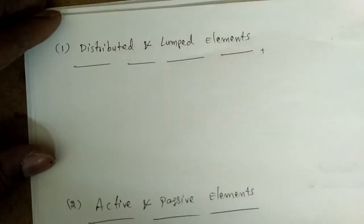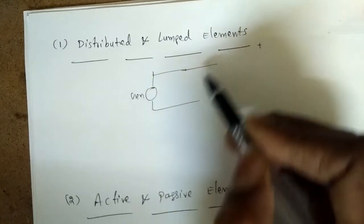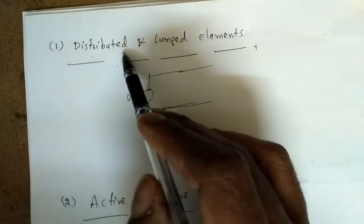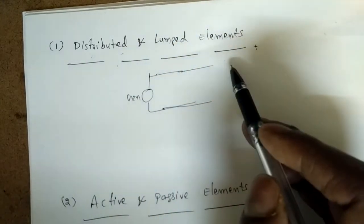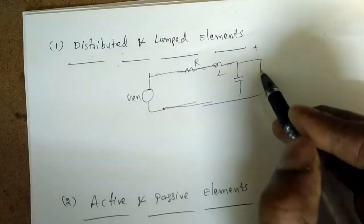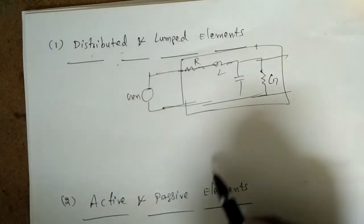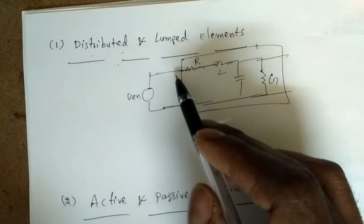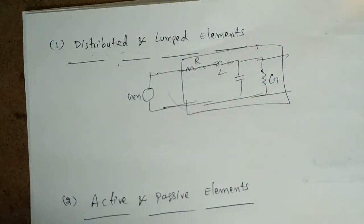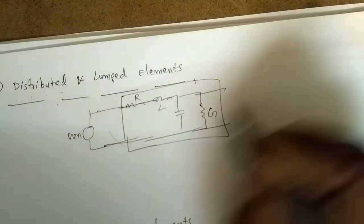A distributed element — for example a transmission line from a generator to homes — is very long and can be represented by an equivalent circuit of R, inductor, capacitor, and conductance G. Distributed elements are used in field theory at very high frequency ranges.